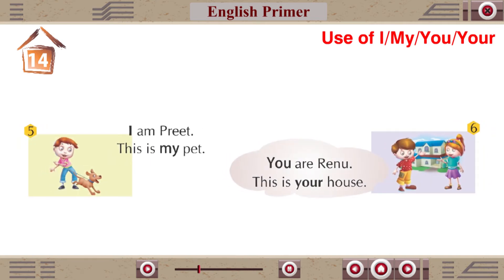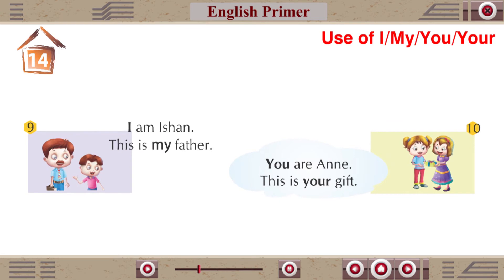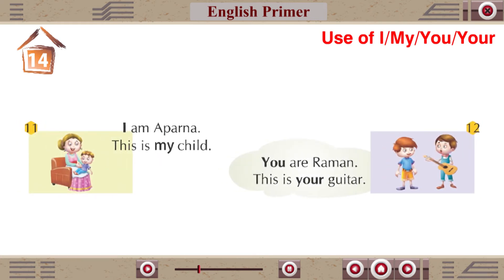I am Preet. This is my pet. You are Renu. This is your house. I am Aman. This is my orange. You are Rohan. This is your football. I am Ishaan. This is my father. You are Annie. This is your gift. I am Aparna. This is my child. You are Raman. This is your guitar.